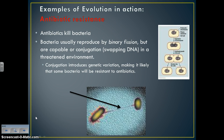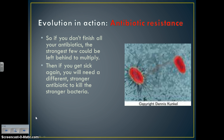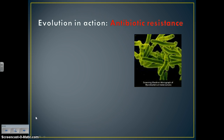When you introduce antibiotics to bacteria, some of them — because they can reproduce through conjugation — are going to be able to survive that antibiotic. If they survive, they reproduce and pass those genes on to future generations. If you don't finish all your antibiotics, the strongest few are left behind to multiply. If you get sick again, you need a stronger antibiotic to kill the stronger bacteria. The bacteria have evolved by natural selection to survive the environmental pressures in your body — this is microevolution in action.